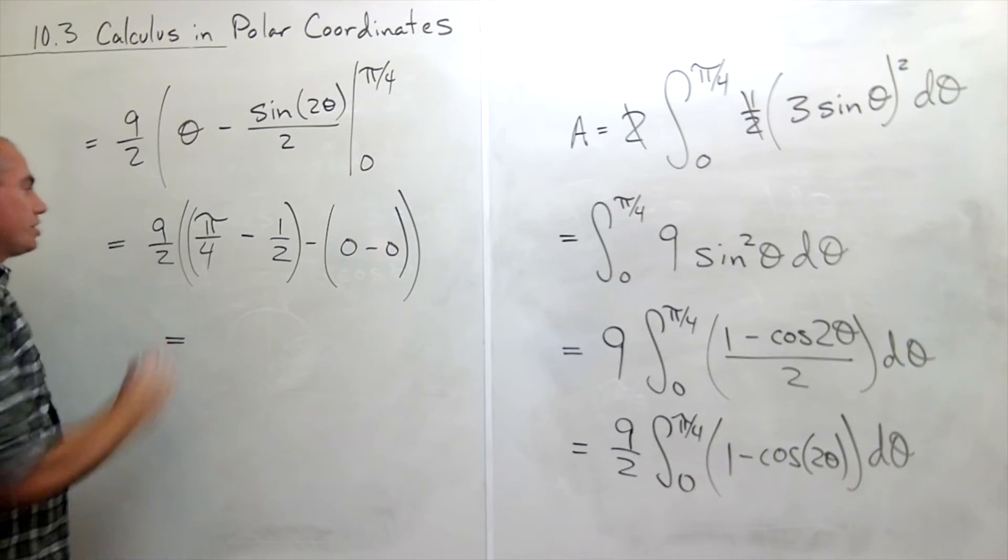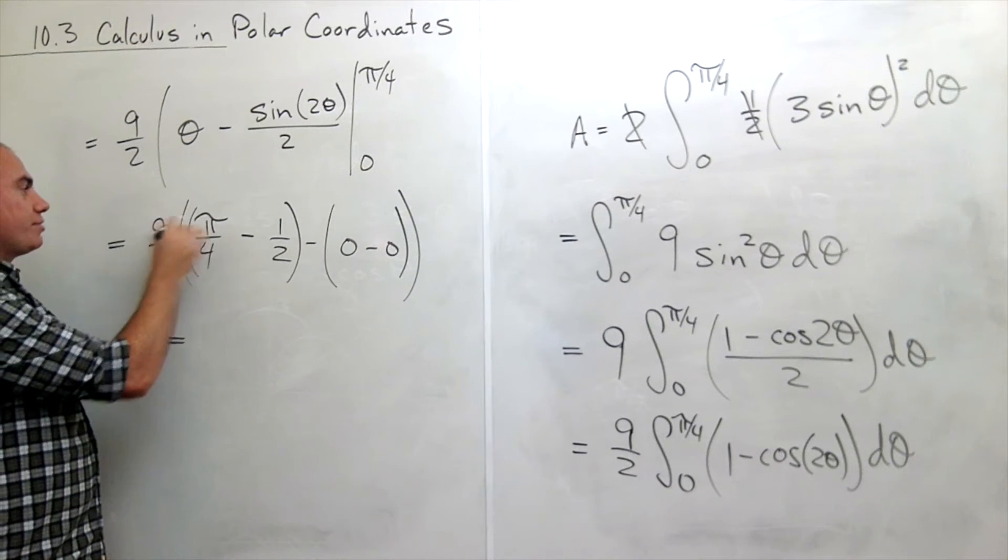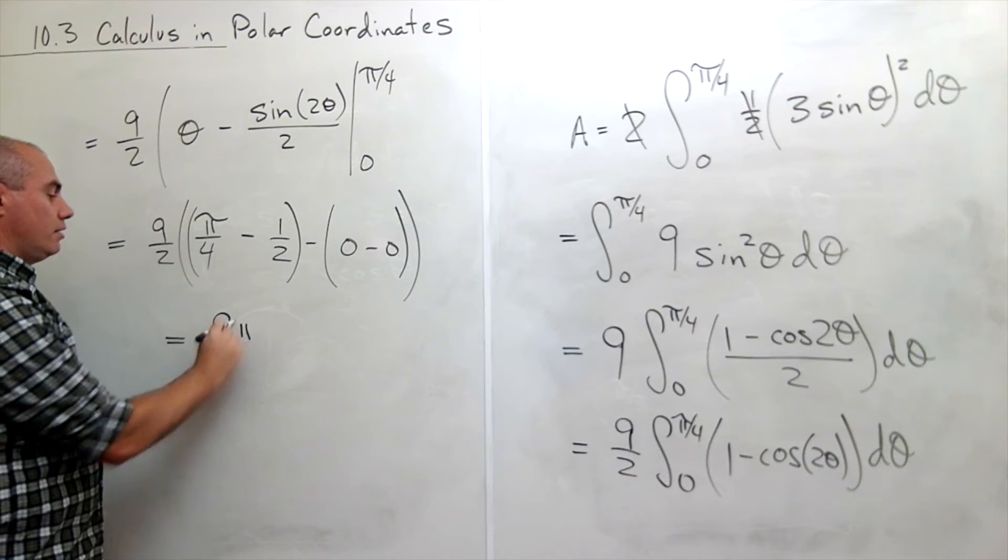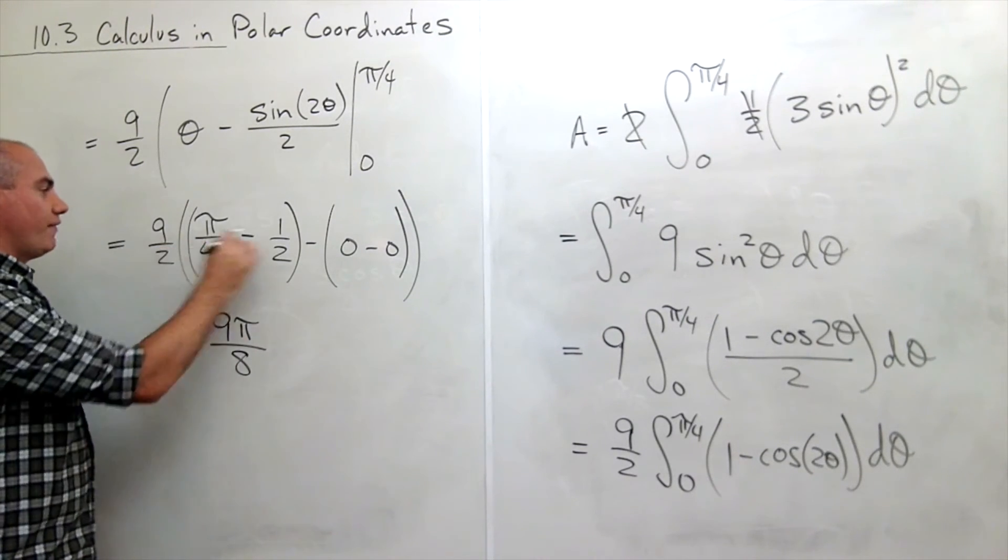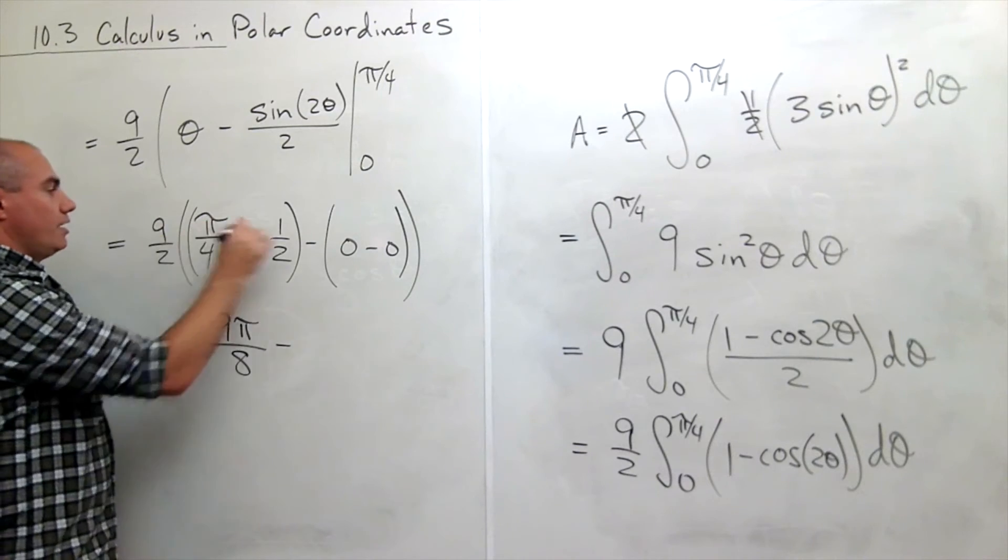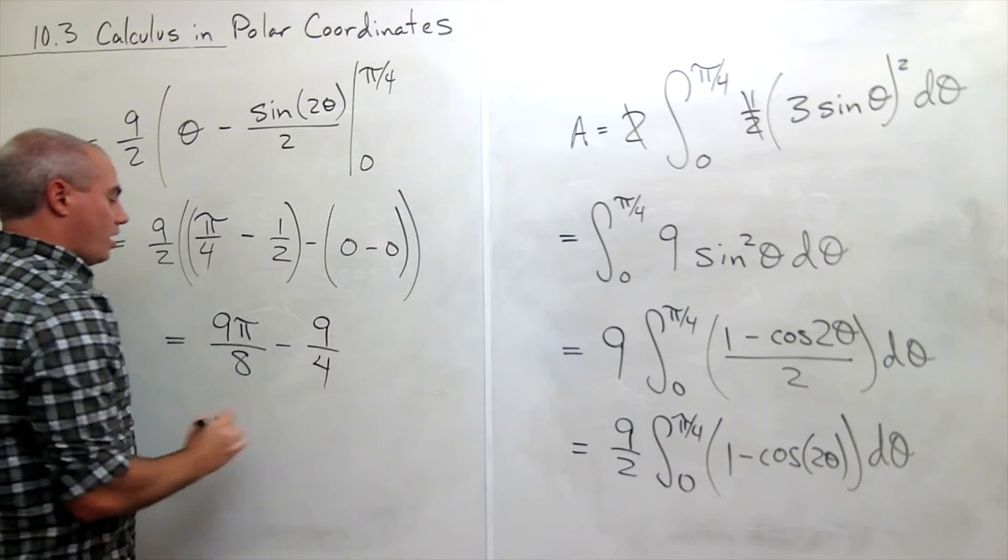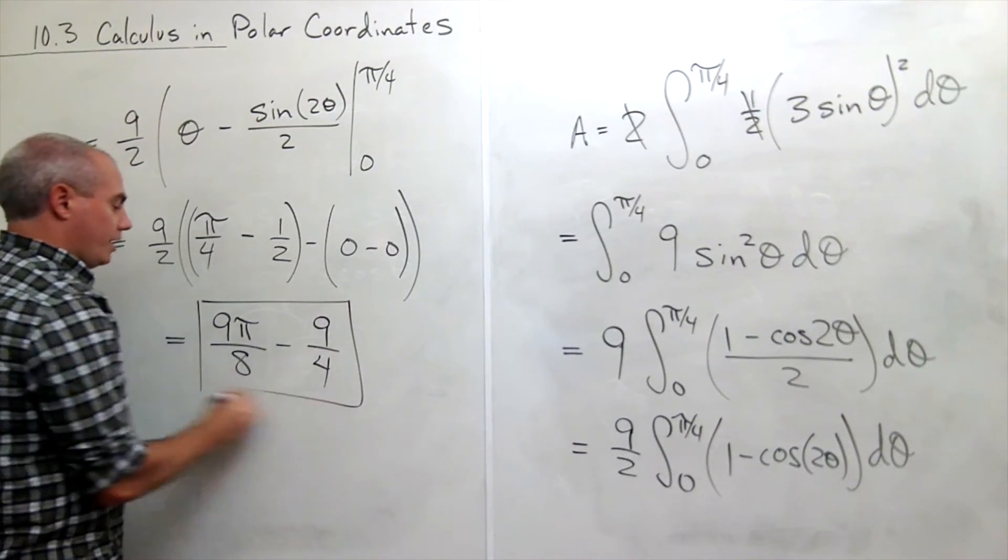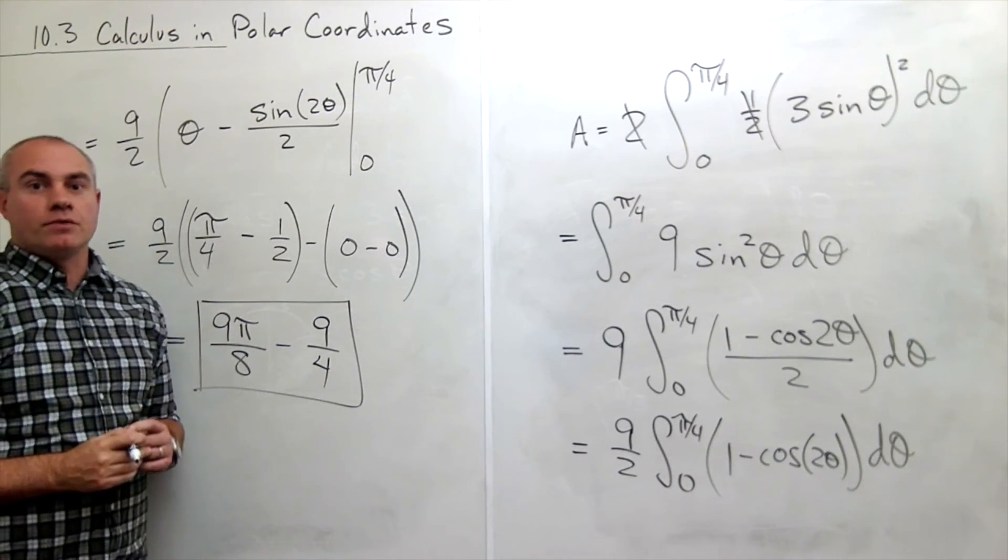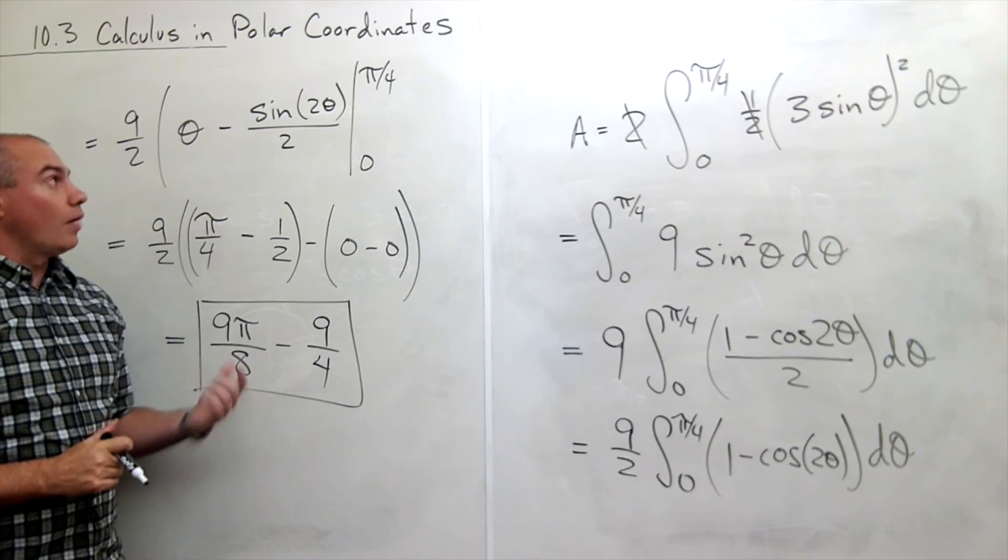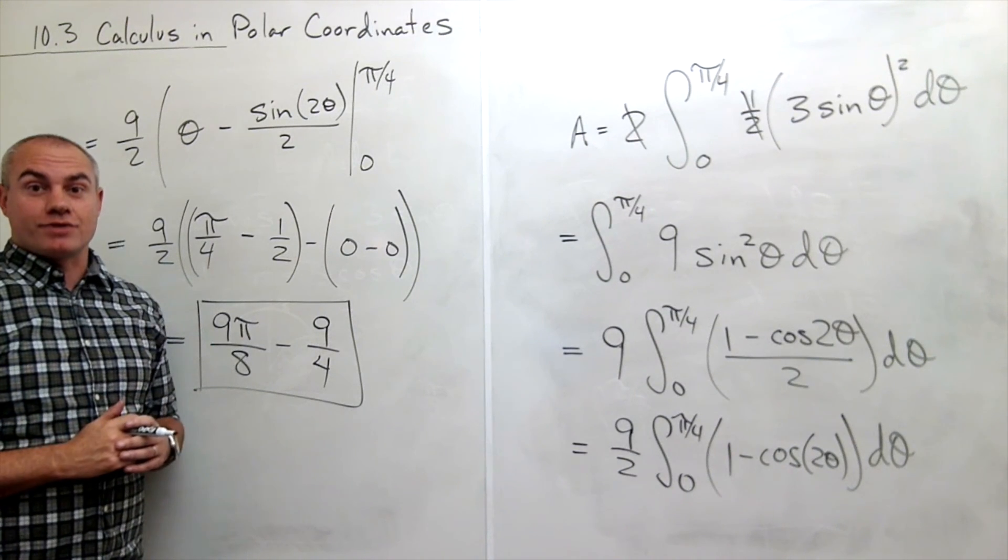So let's just multiply this through to see what we get. If I multiply this through, I get nine pi over two times four, which is eight. So nine pi over eight. Now if I multiply through here, I get nine on top and a four on the bottom. So I end up with nine pi over eight minus nine fourths would be the answer for what is the area trapped between these two circles.